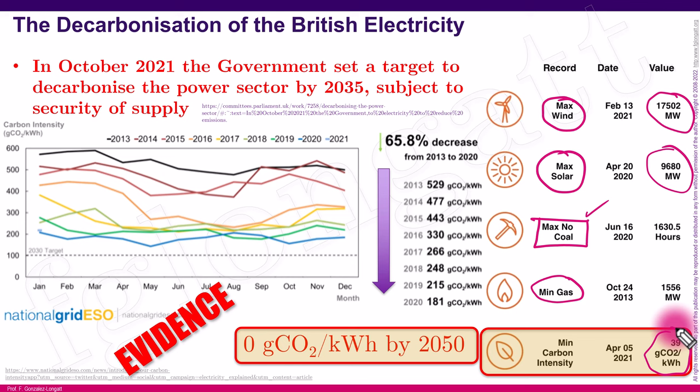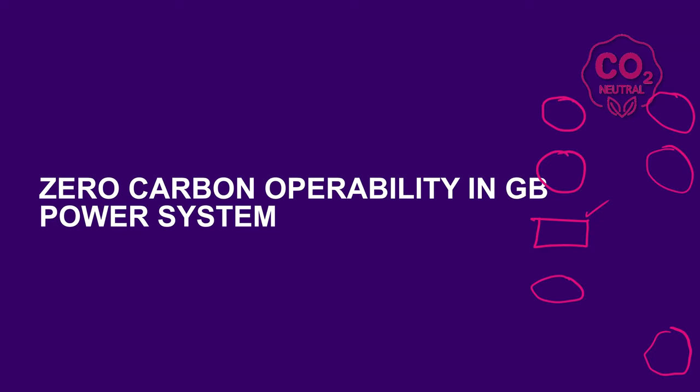That means that over time, we have been reaching closer and closer to zero. Let's see how the net zero or zero carbon operativity in GB has evolved in recent times.